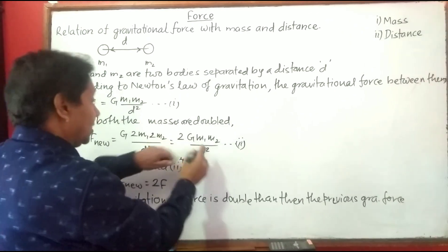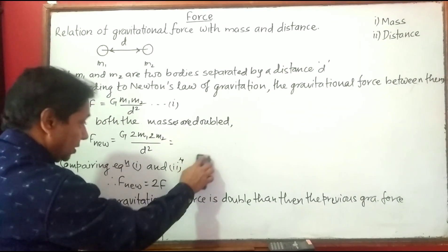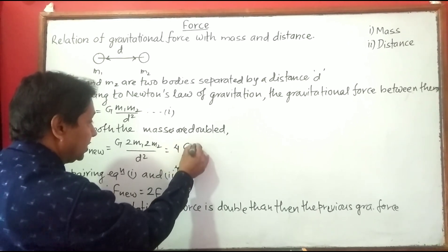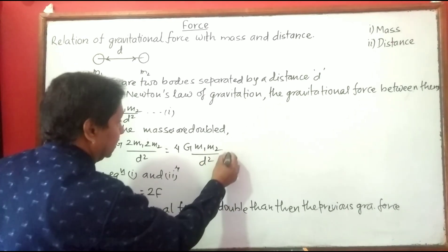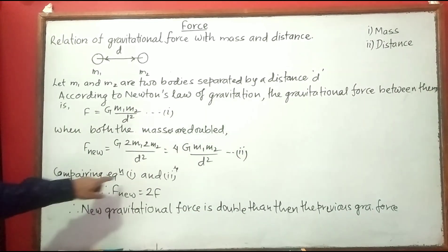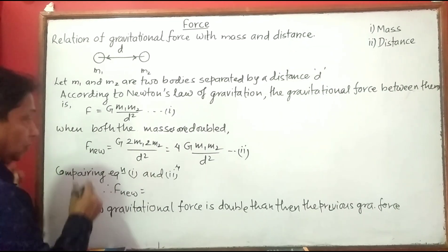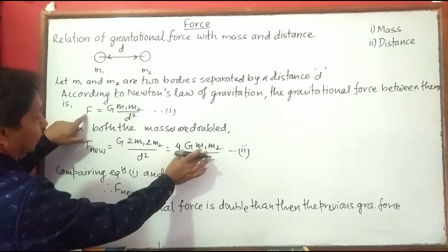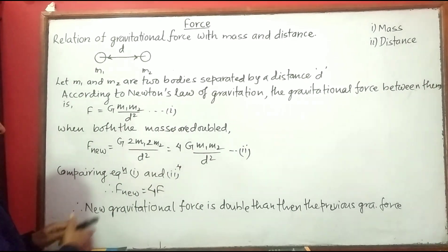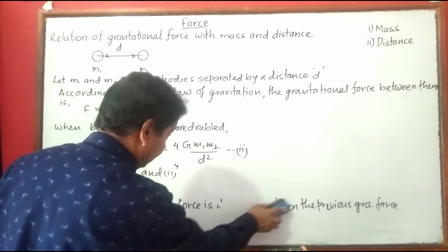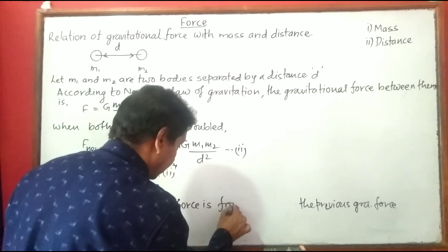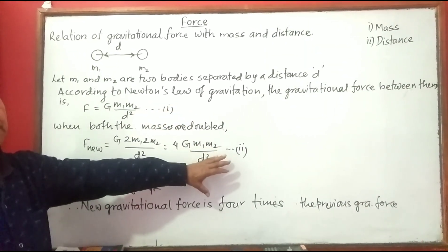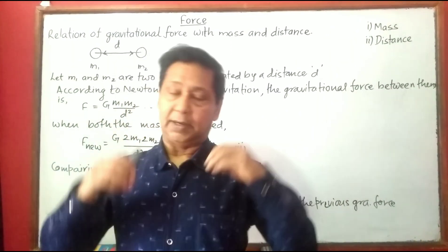The distance remains the same. So we get 2×2 = 4, giving us F_new = 4·G·m1·m2 / d². This is equation number two. Comparing equation one and two, G·m1·m2 / d² can be written as F, so F_new = 4F. The conclusion is: the new gravitational force is four times the previous gravitational force.